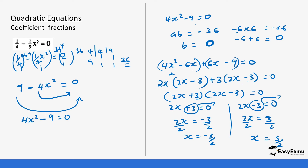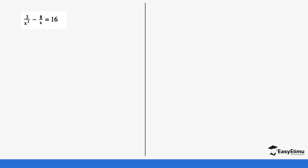Let's do a bit more practice. The biggest thing with fractions is you have to get the LCM. The next question is: 3/x² minus 8/x equals 16. Let's rearrange the equation first before we get the LCM, so it becomes 3/x² minus 8/x minus 16 equals zero. We just brought 16 to the other side to get minus 16.